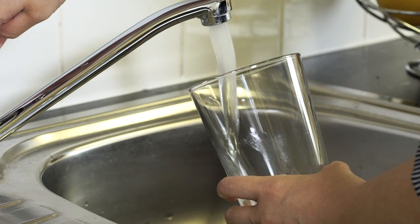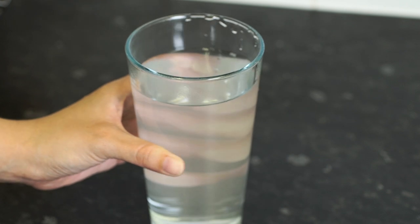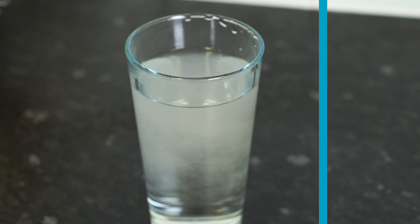To check if there's air in your supply, fill a clean glass with cold water and leave it to stand for a few minutes. The glass should clear from the bottom upwards as the air bubbles start rising to the surface.